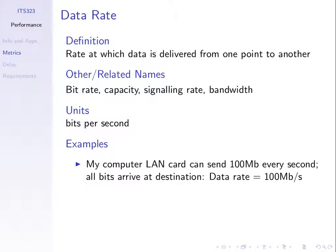In the next topic we'll look at how we can achieve particular data rates — why is it 100 megabits per second and not 200 or a million? But at this stage, think of data rate as something that's given: this is the data rate of this particular technology. It specifies the speed at which we can send bits out of our computer — the speed at which I can send bits from my laptop onto the LAN cable.